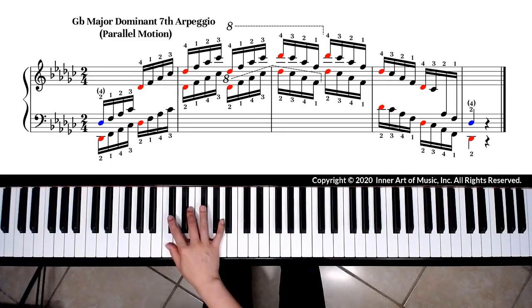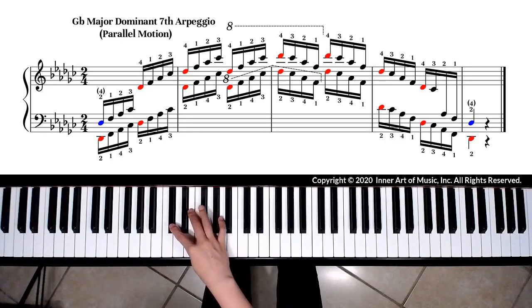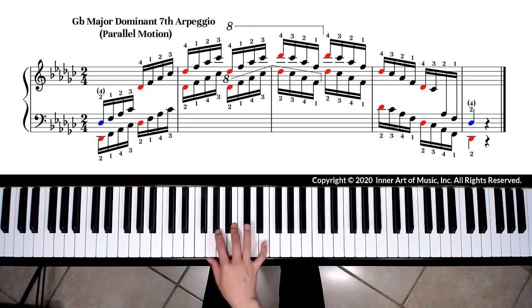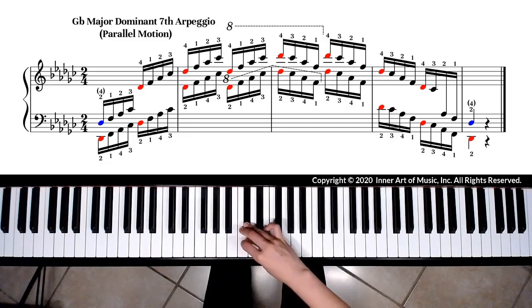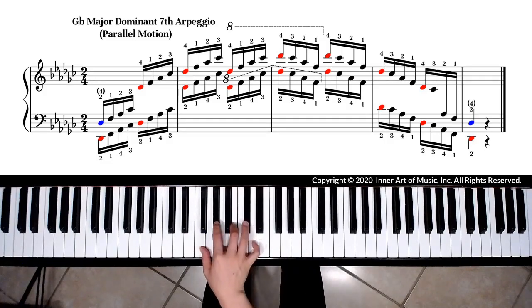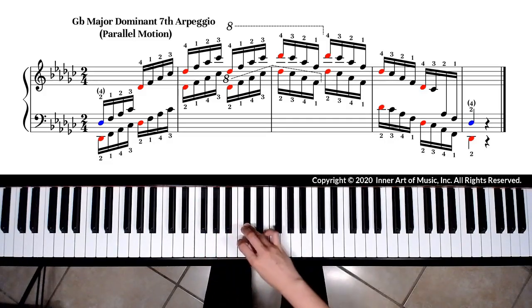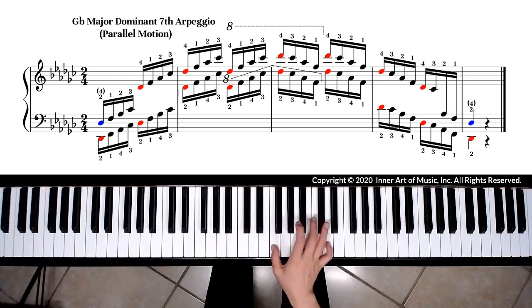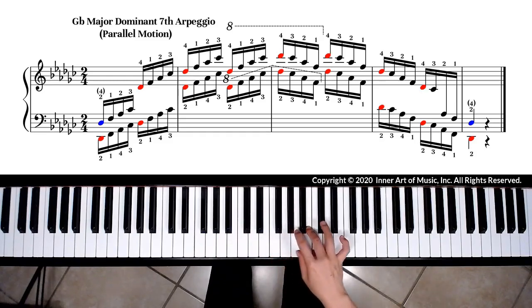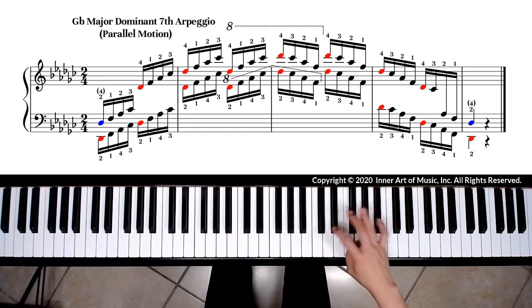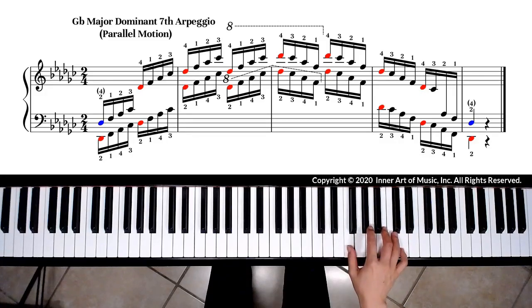To be able to play a good legato arpeggio, you should angle your hand in the direction you are going. If you are playing an ascending passage, you should angle your hand a little bit to the right. That way, the thumb is closer to the next note, and you will have a smooth wrist motion across the keyboard.